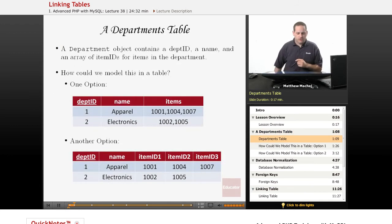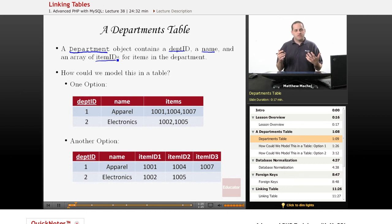So basically, we know that a department object from our web application has three properties. It has a department ID, a name, and then it has an indexed array of item IDs where each item ID represents an item in a department.